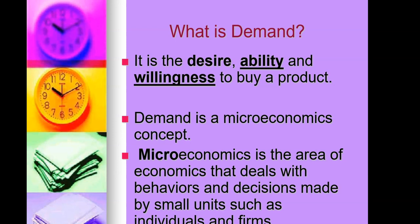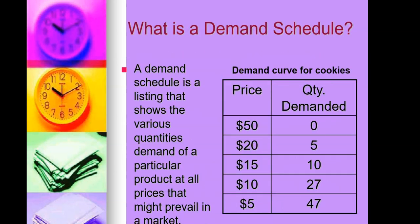What is a demand schedule? A demand schedule is a listing that shows the various quantities demanded of a particular product at all prices that might prevail in a market. To the right you have a demand schedule — on the left-hand side you have a bunch of prices, and there is a relationship between the price and the quantity demanded.